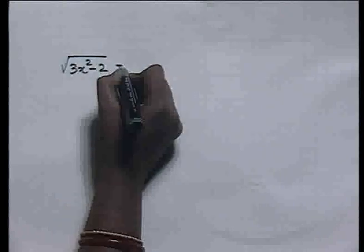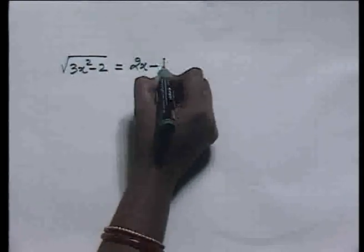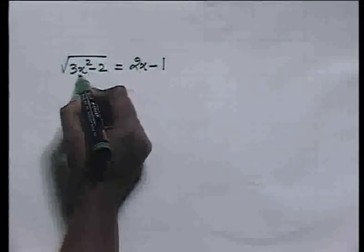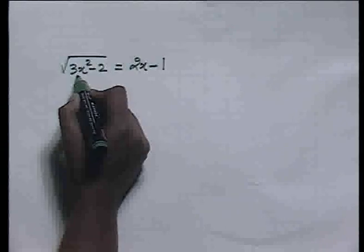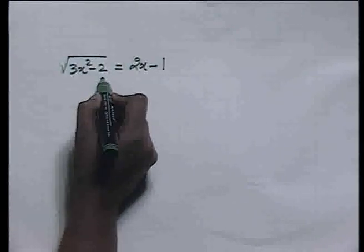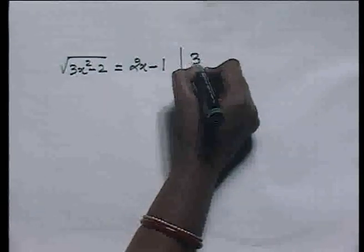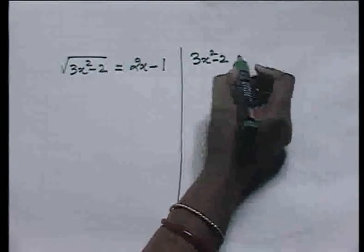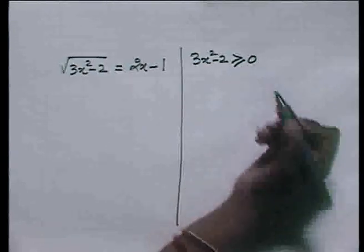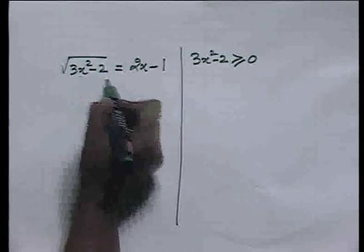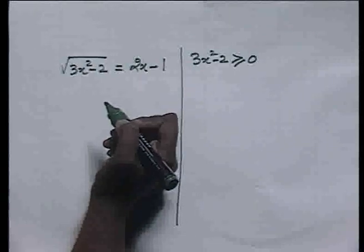Look at the equation: √(3x² - 2) = 2x - 1. Look at this equation carefully. The left hand side of this equation is the positive square root of 3x² - 2. Also, 3x² - 2 should be non-negative, because in real numbers there are no square roots of negative numbers.